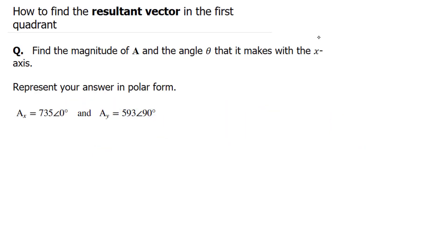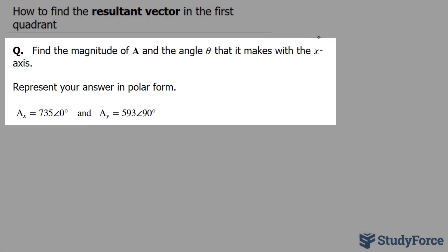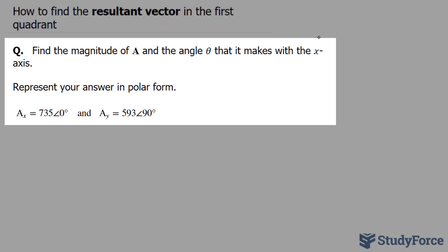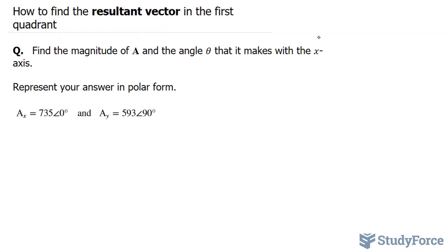In this video, I'll show you how to find the resultant vector in the first quadrant. The question reads: find the magnitude of vector A and the angle theta that it makes with the x-axis. Represent your answer in polar form.